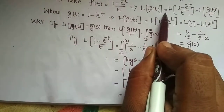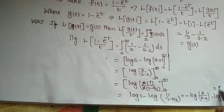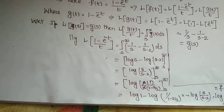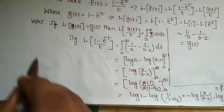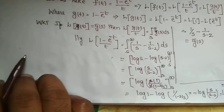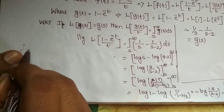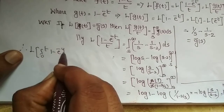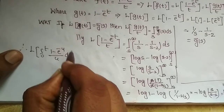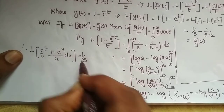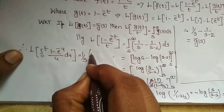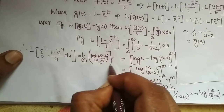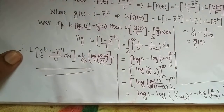So what we called L{f(t)} is f̄(s), which is log((s+1)/s). Therefore, the final conclusion: the Laplace transformation of the integral from 0 to t of (1 - e^(-u))/u du is equal to 1/s times f̄(s), and f̄(s) is log((s+1)/s). This is the final answer.